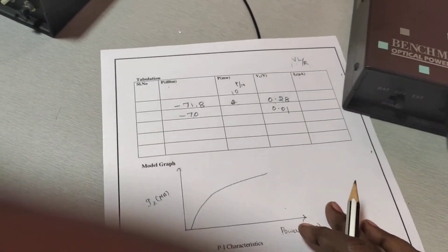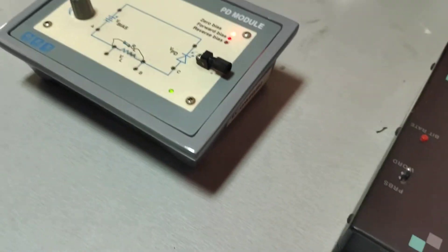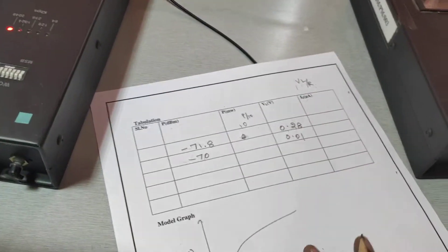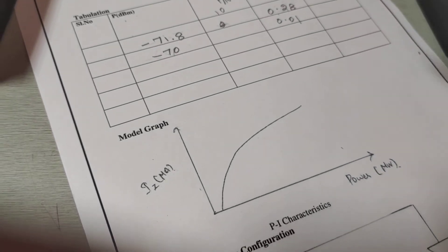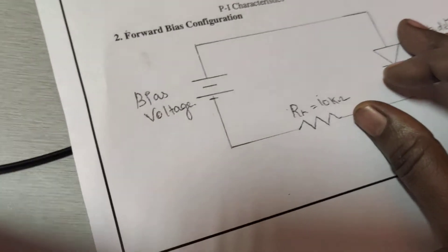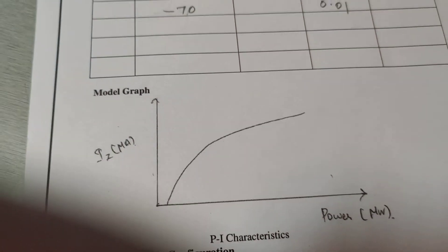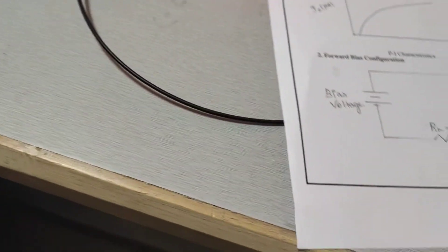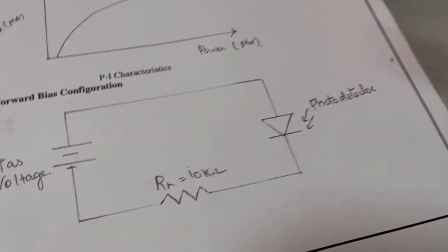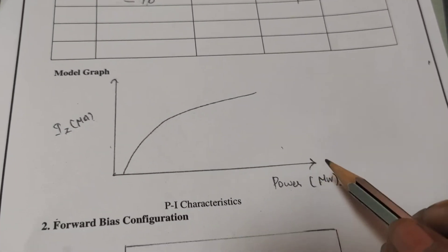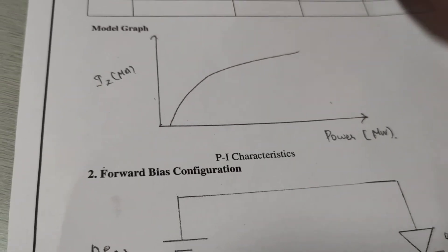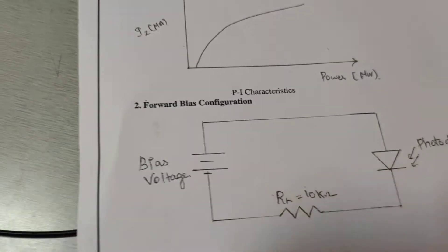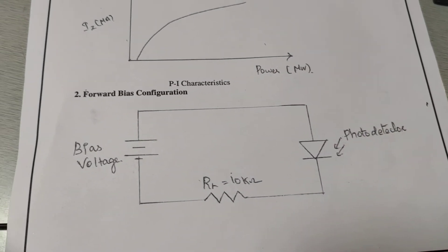We repeat the procedure to take five or six readings. Before giving the optical input to the photodiode, we measure the power using the power meter. After taking the readings for VL, we calculate IZ and plot the P-I characteristics — that is, power in milliwatts versus current — for the zero bias condition.